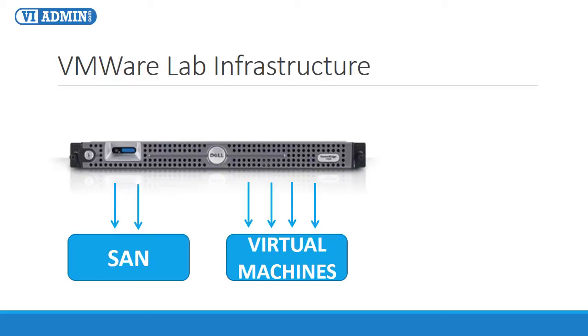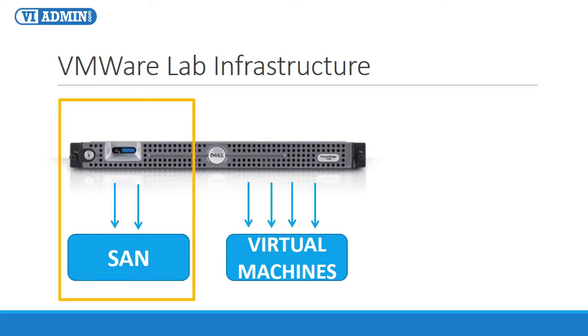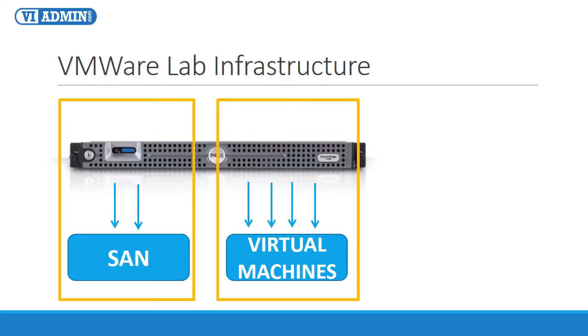In each physical server, we have six network cards — two of them dedicated to SAN connectivity and four to virtual machines and management — 32 gigs of RAM, and a KVM controller.